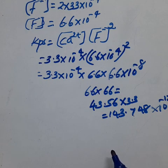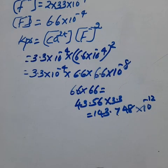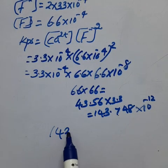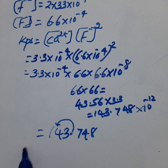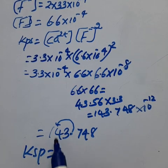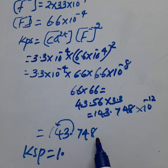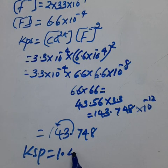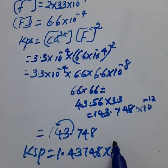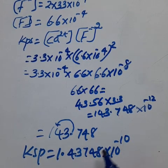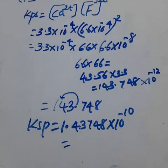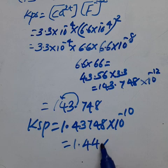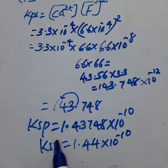This is the answer. Ksp can be written as 1.43748 into 10 raised to minus 10, which equals 1.44 into 10 raised to minus 10. So Ksp of calcium fluoride is 1.44 into 10 raised to minus 10.